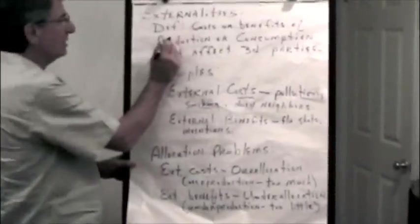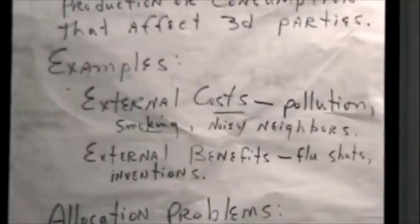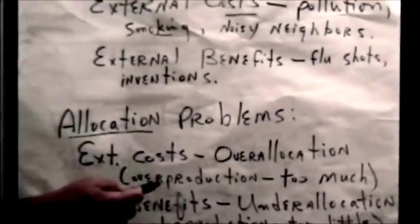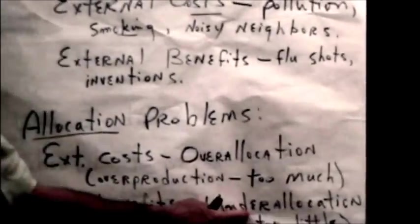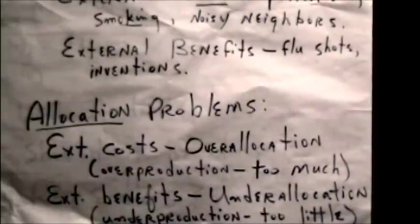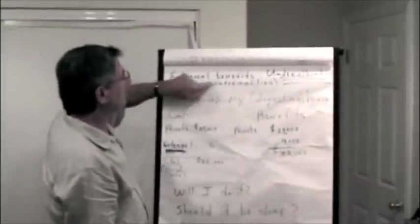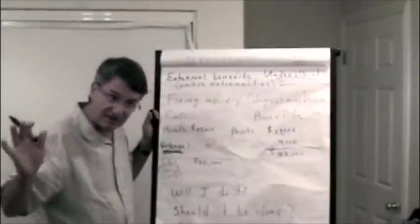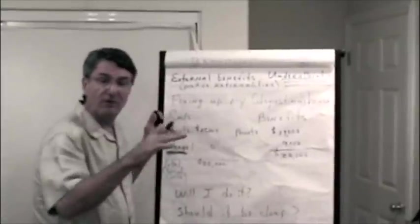Now, when it comes to external costs and benefits, there are allocation problems. That means that the society will not be allocating its resources correctly. There will either be an overallocation problem, as is the case with external costs, or an underallocation problem, if there are external benefits associated with the production or consumption of some good. So, let's get to it a little bit and explain why. First, let's start with external benefits. With external benefits, there's an underallocation. There will be too few resources sent to this area of production and too many to some other area of production. That is, too few for the well-being of the society.